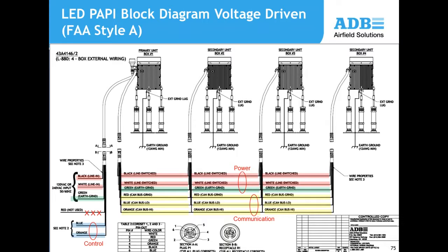Here is an example of mounting and installing the PAPI system. A typical four-box system shows that a voltage-driven PAPI has two conduits from the first box; the remaining units each have one flexible conduit carrying power and communication lines between the PAPI boxes. Power is shown in red and communication signal lines in yellow on the diagram.